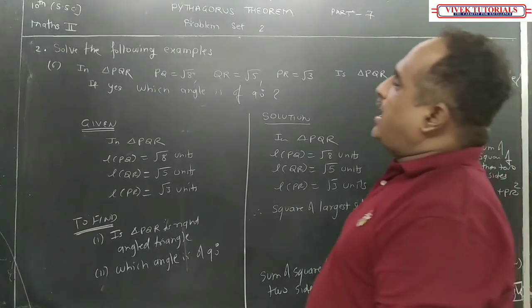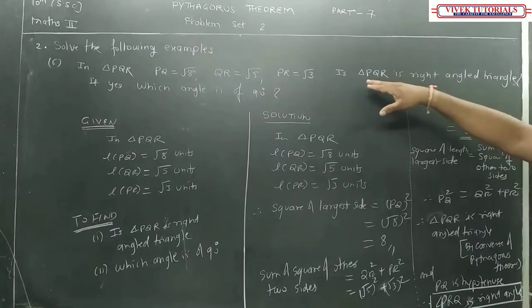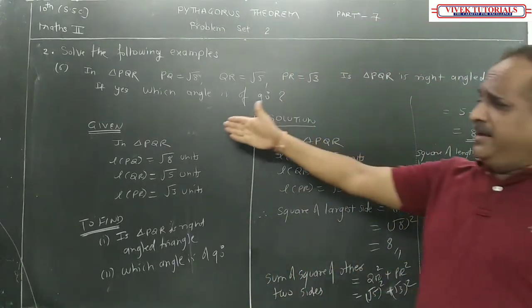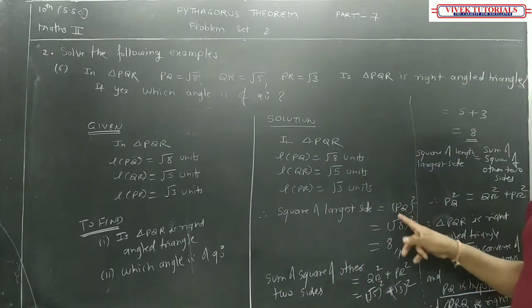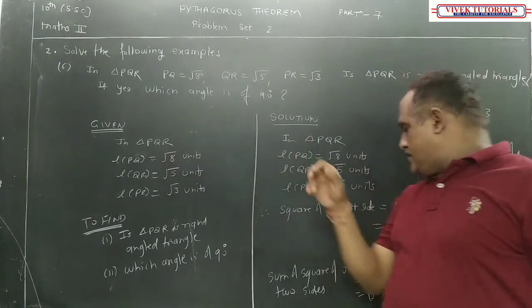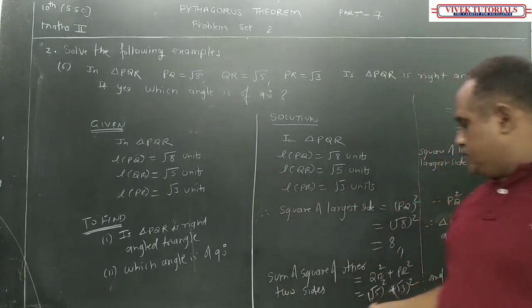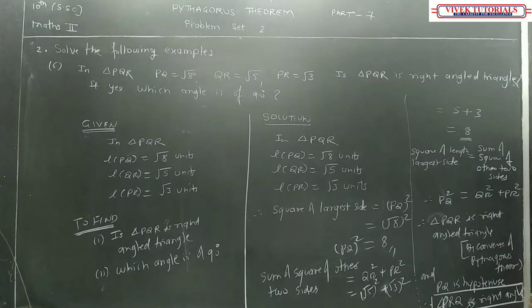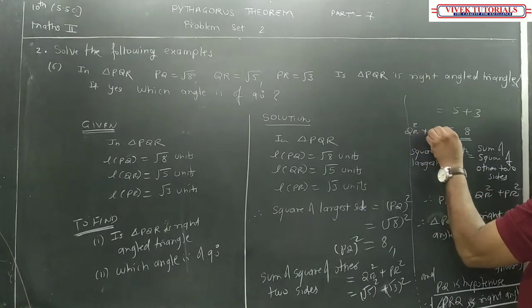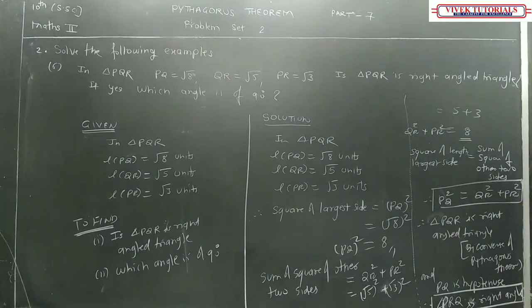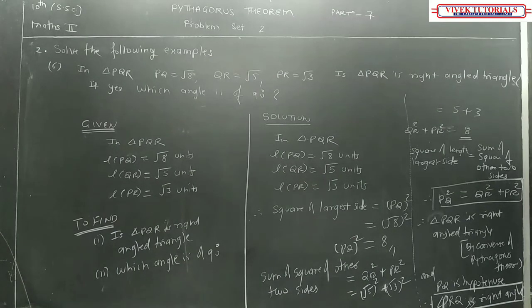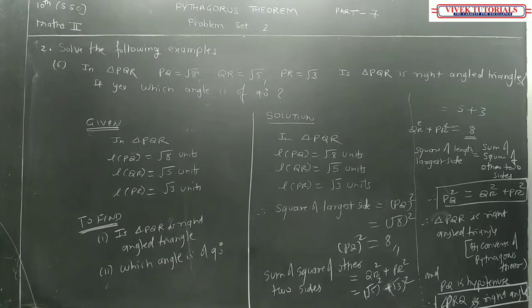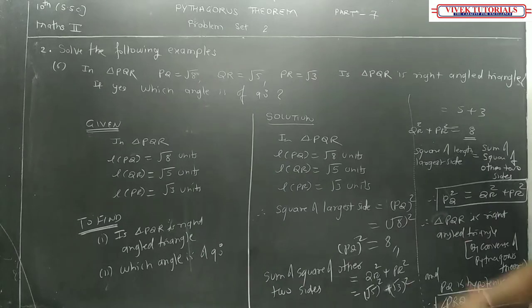PQ is the hypotenuse — the largest side. Therefore angle PRQ is the right angle. To repeat: PQ equals √8 is the largest side, so PQ square equals QR square plus PR square, meaning triangle PQR is a right angle triangle by the converse of Pythagoras theorem. PQ is the hypotenuse and angle PRQ equals 90 degrees. Copy it down properly by pausing the video.